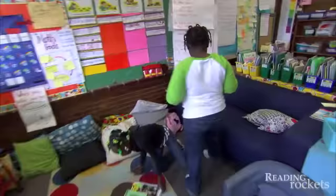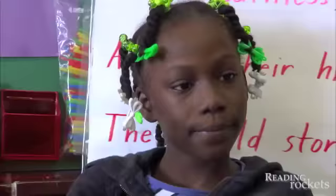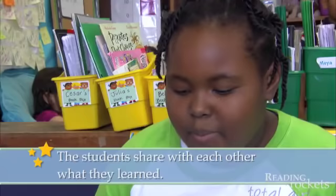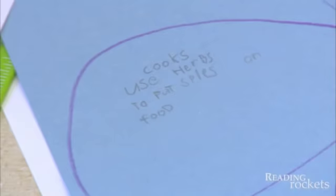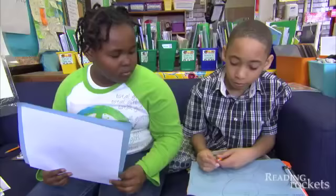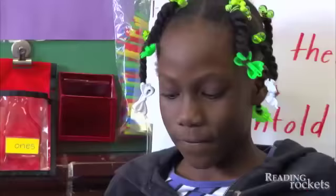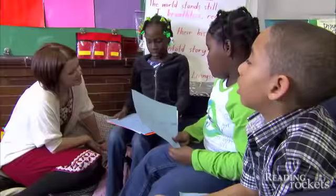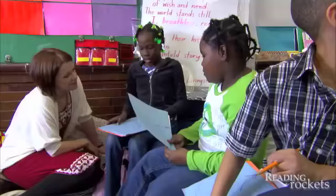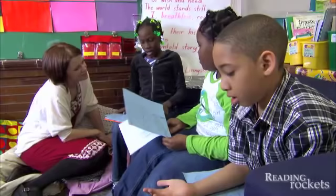As the final step in Jigsaw, each student teaches the others in their home group about the subtopic they researched. Moya shares what she learned about herbs: "Cooks use herbs to put spices on food." The others teach her about growing flowers — "It takes over a week to grow flowers" — and gardening with vegetables: "You can grow lettuce, spinach, and tomatoes in your house."